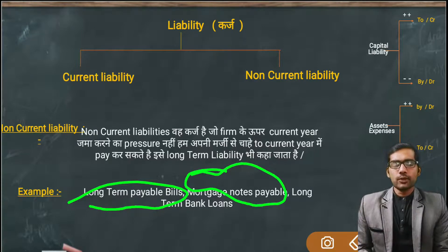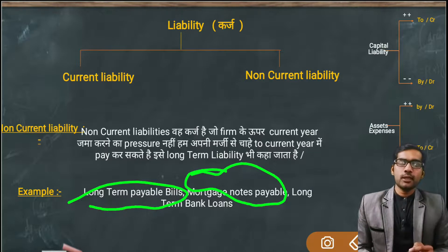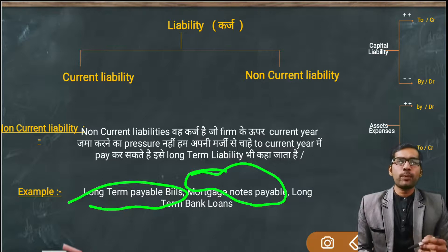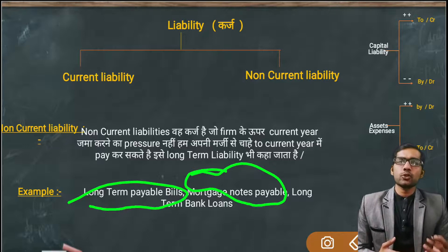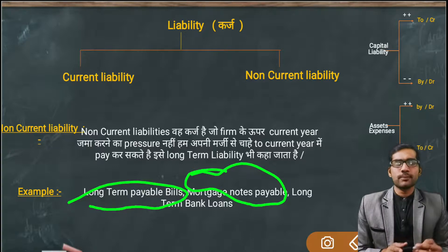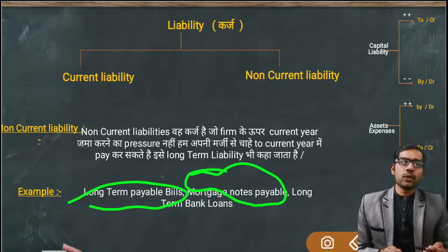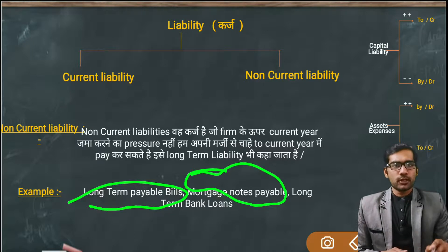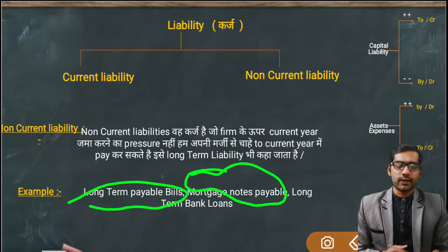Mortgage means you have kept some item as collateral with someone and borrowed money. That item remains with them; they will not pressure you to repay in the current year. If you don't pay, the goods may be seized. So Mortgage Payable Notes fall under Non-Current Liability — they don't ask you to return the money immediately; as long as you repay, your pledged asset remains safe.